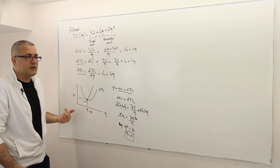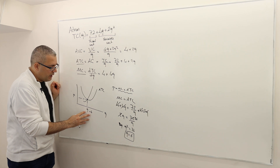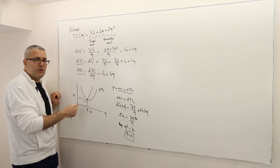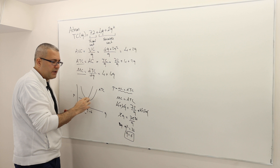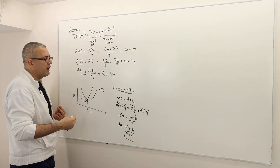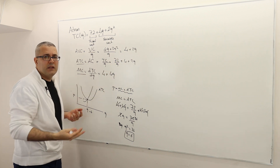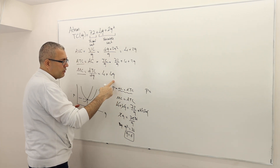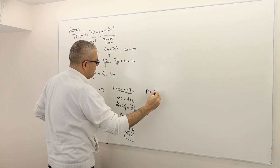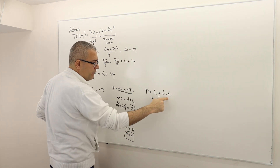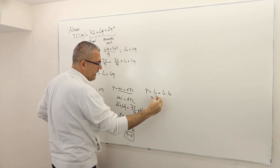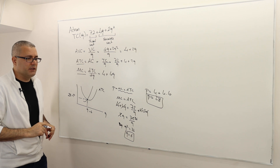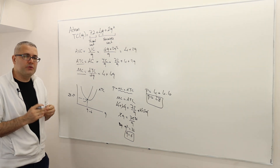To find the corresponding price, plug q = 6 into either the marginal cost or ATC — they are equal at that quantity. Using the simpler marginal cost: P = MC = 4 + 4(6) = 4 + 24 = $28. So the long-run market price will be $28, and this producer will sell six units per day.